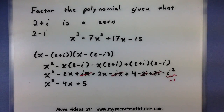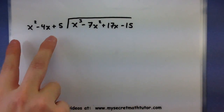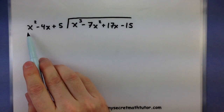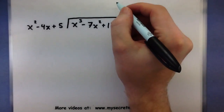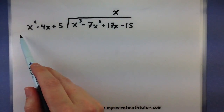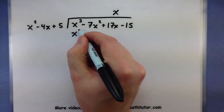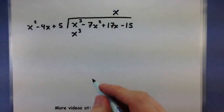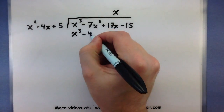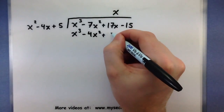Let's use long division to find that last remaining factor. I have my original polynomial divided by x squared minus 4x plus 5. First, I need to figure out what to multiply x squared by to get x cubed — that's x. So x times x squared is x cubed, x times minus 4x is minus 4x squared, and x times 5 is plus 5x.